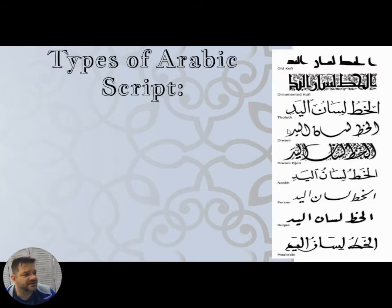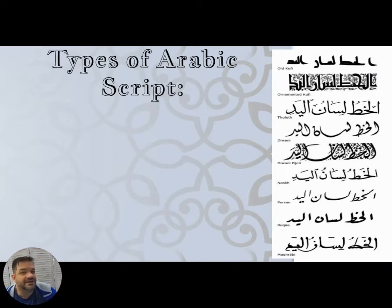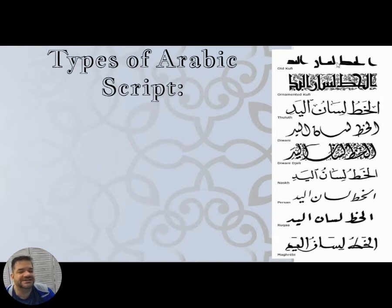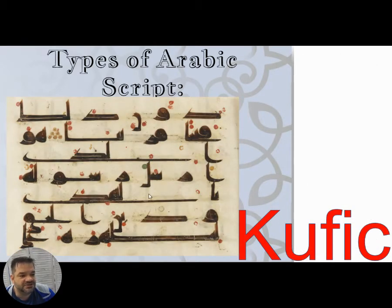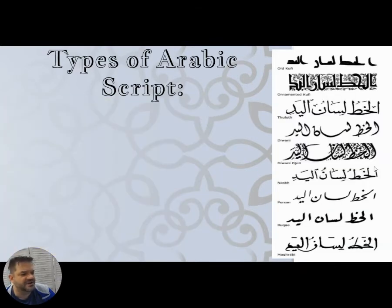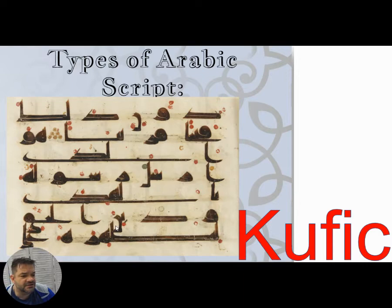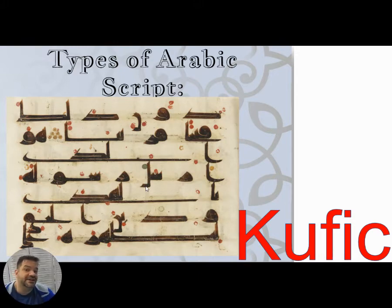The script we want to look at is called Kufic. It's an older style used early on as a means of writing and decoration on buildings and in text. It's very angular — like big block letters — as opposed to other scripts that are very spindly, long, and curvy. The advantage of Kufic is that you can see and understand it from a distance; it's easier to read.